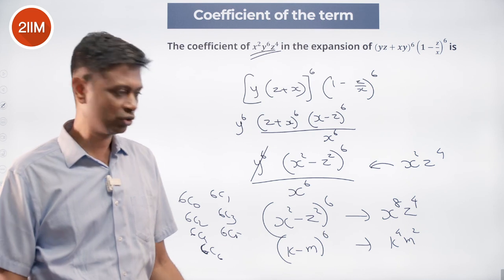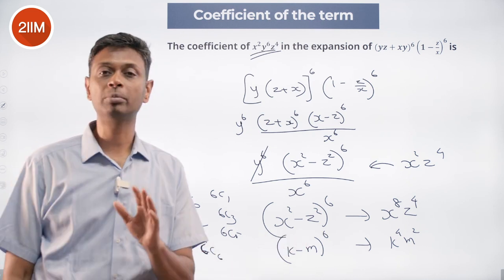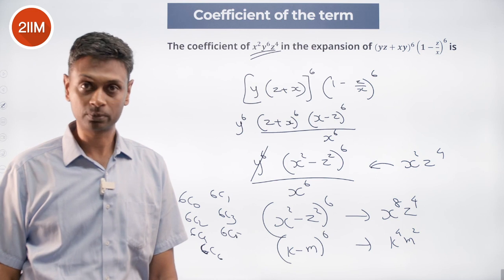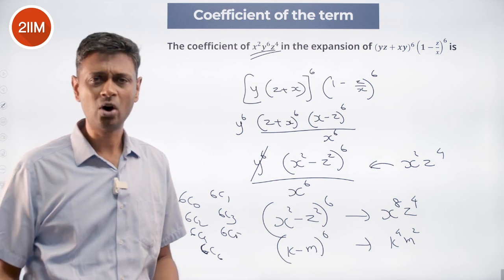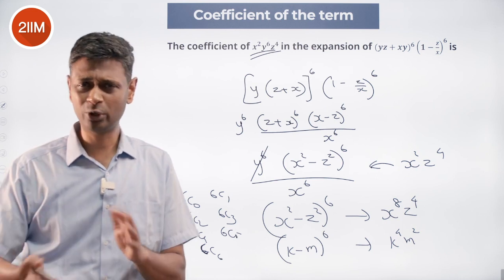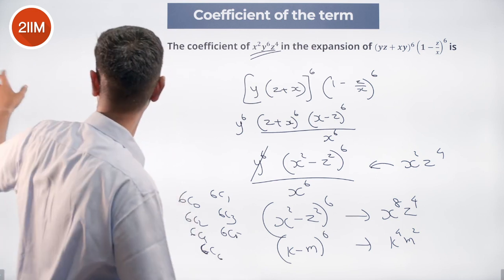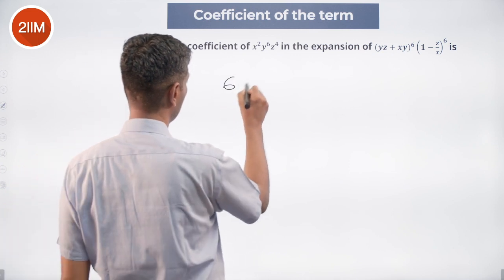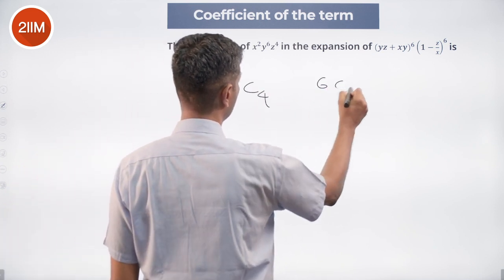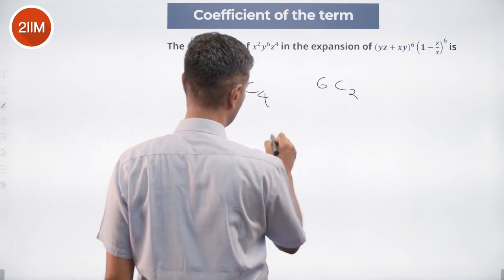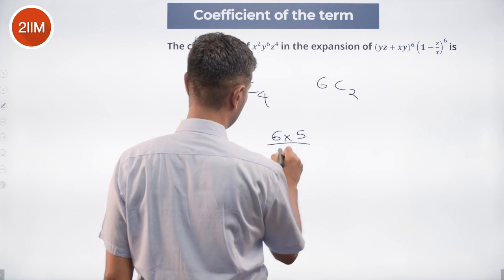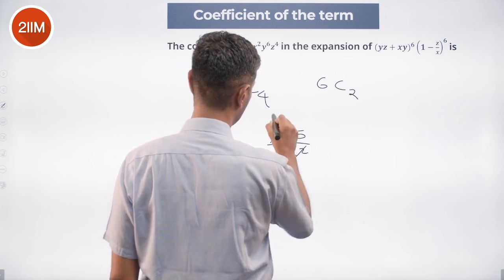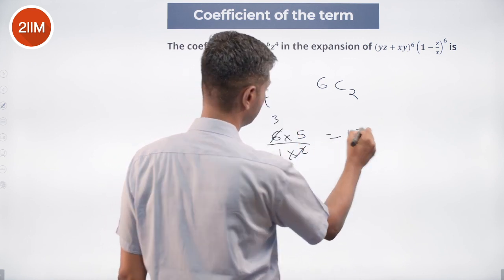First of all, once you raise this to power 4, it is going to be positive. And we are looking at 6C4 or 6C2, depending on which way you write it — both are equal. We are looking at 6C4 as the answer, which is nothing but 6C2 = 6 into 5 by 1 into 2 = 15.